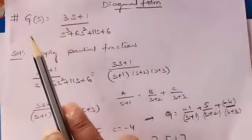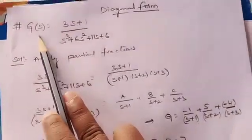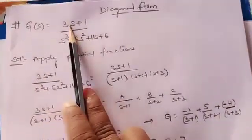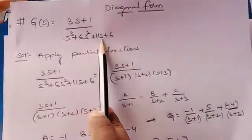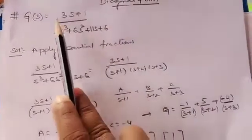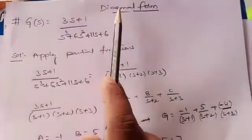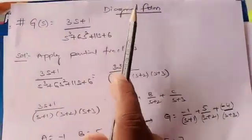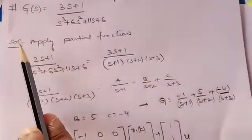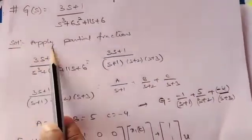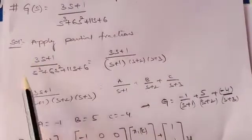The given transfer function is G(s) = (3s + 1) / (s³ + 6s² + 11s + 6). For this given transfer function, we have to find out the diagonal canonical form. The first step is to apply partial fractions.